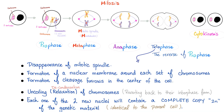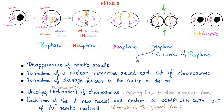Telophase — the end, the purpose. What happens here? Basically the reverse of the prophase. In prophase there was formation of the mitotic spindle — now there's disappearance of the mitotic spindle, because we no longer need them. In prophase there was dissolution of the nuclear membrane — in telophase there's formation of the nuclear membrane, because we need to surround the nuclear material of each cell. Then you have formation of cleavage furrows — these are where the cells are ready to divide. And there is uncoiling and relaxation of the chromosomes, reverting back to their interphase form. Each of the two nuclei will contain a complete copy, 2N, of the genetic material identical to the parent cell.